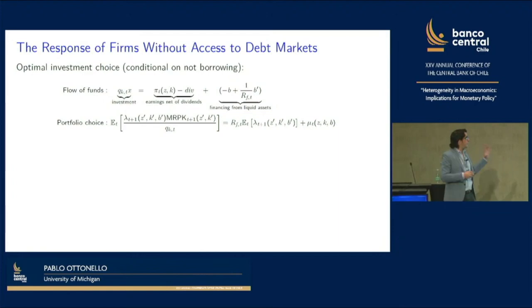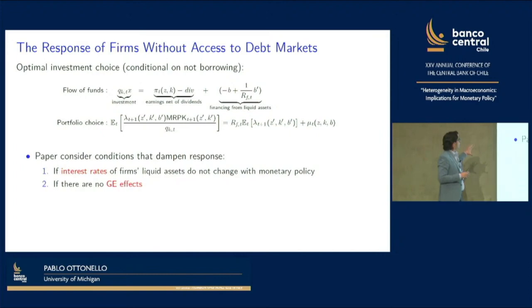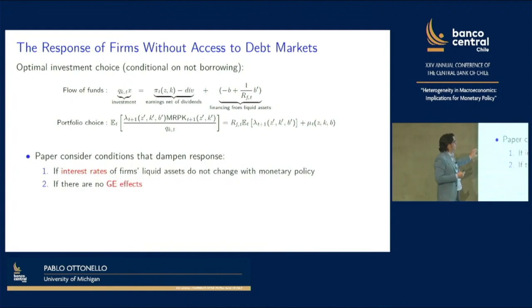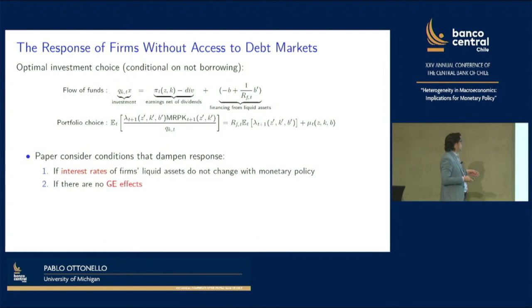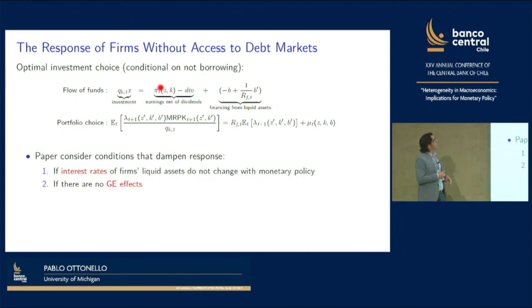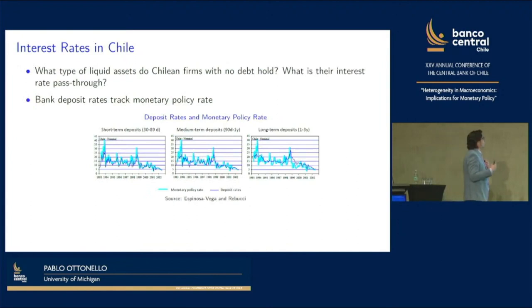If we look at this portfolio condition, we might expect these firms to be responsive to changes in monetary policy. How does the model generate that these firms are not responsive? There are two key assumptions. One is that the model assumes interest rates on these firms do not change with monetary policy — the paper assumes RF equals one — so there is no portfolio incentive for a firm to accumulate more capital when the risk-free rate changes. The other is that there are no general equilibrium effects — because if earnings increase due to GE effects, these firms would also respond.